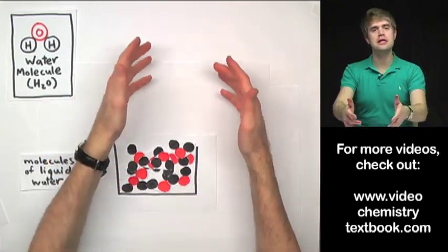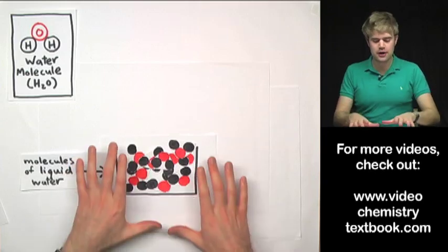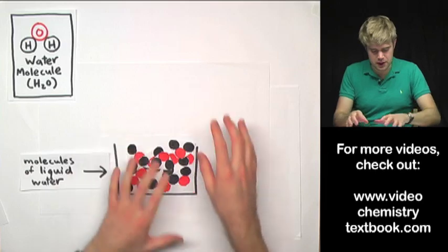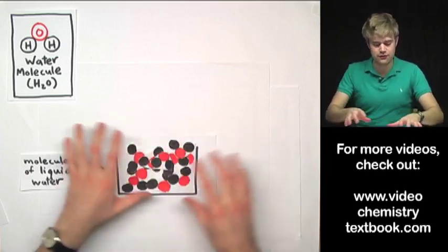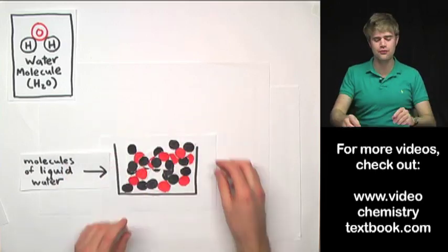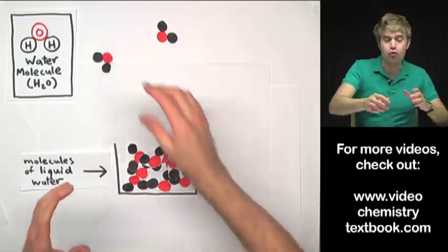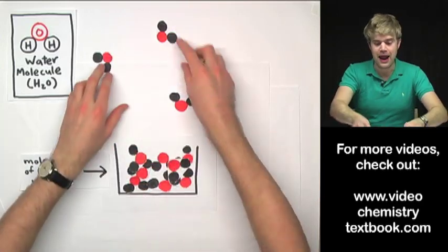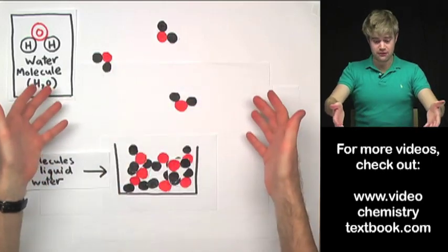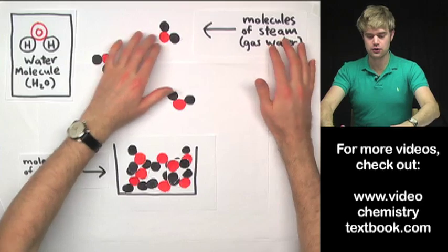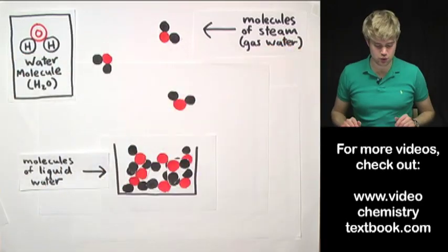Let's now make some steam, some gas water. What we're going to do is we're going to heat up this liquid water and as we heat it up the molecules in it are going to start moving faster and faster and faster until some of them are moving so fast that zoom, they can jump right out of the liquid water, enter the air above that liquid and start flying around. Now these guys up here are molecules of steam also known as gas water.